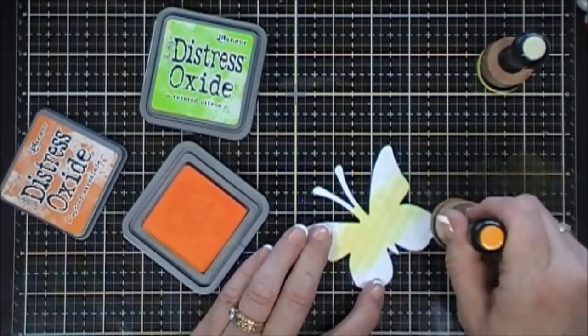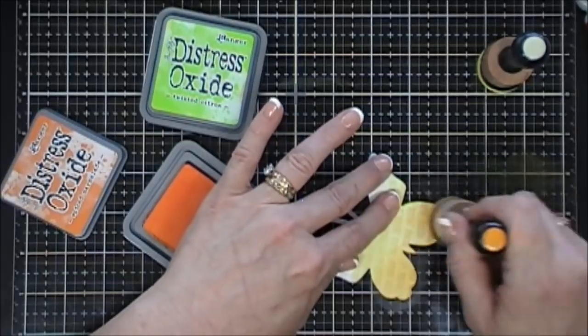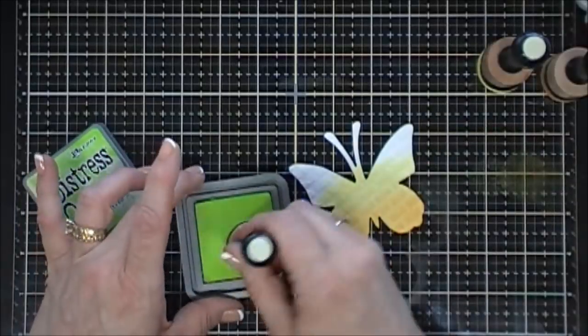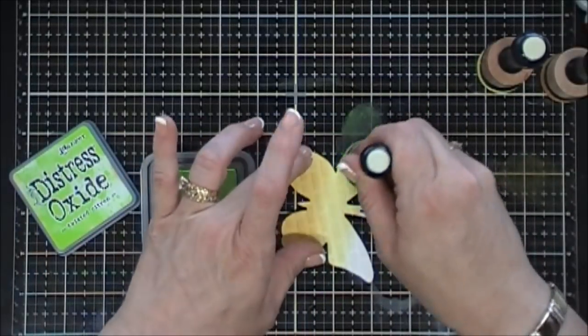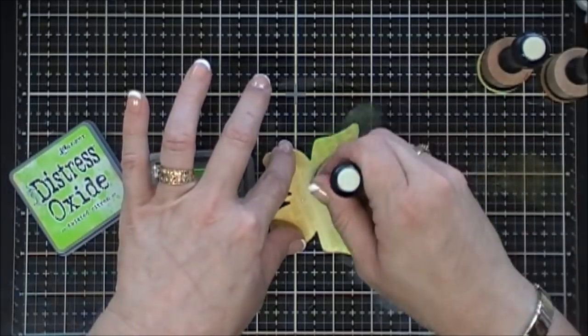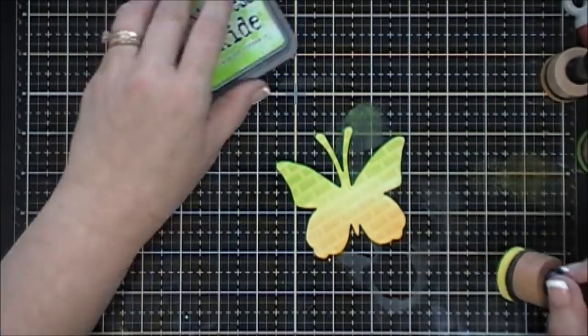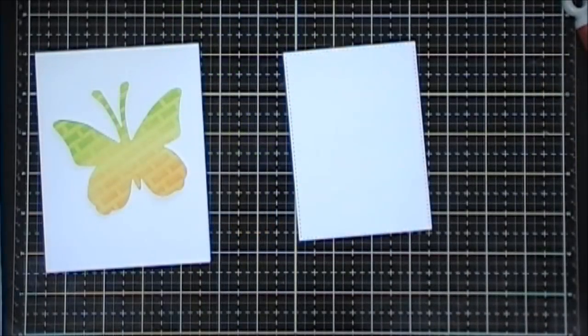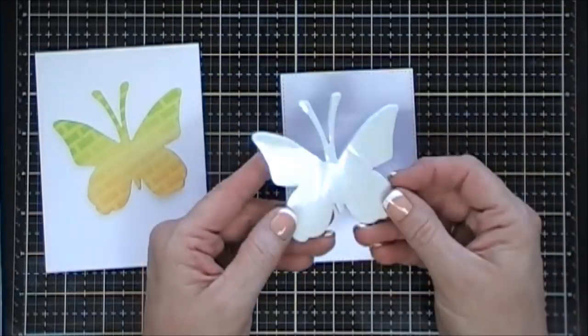I'm going to go over the bottom with some Spiced Marmalade, and then I'll go over the top of it with my Twisted Citron. And then just using whatever's left over on my yellow blending tool, I'm going to blend those colors a little bit better right in the middle, and I think that creates a really beautiful butterfly.